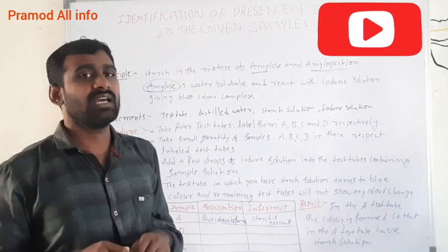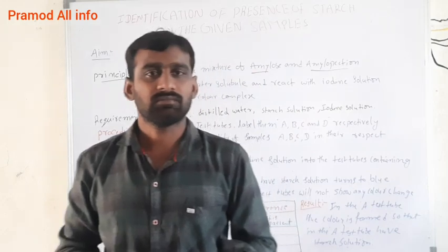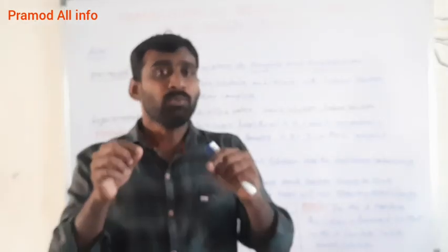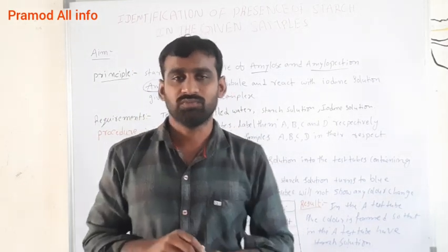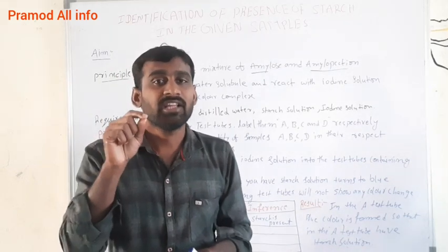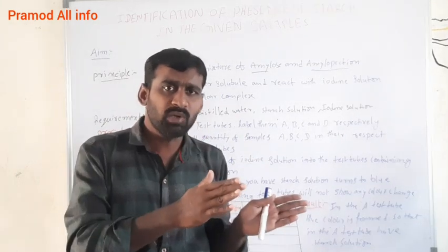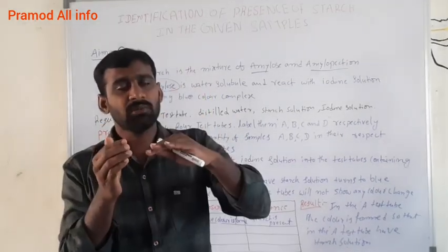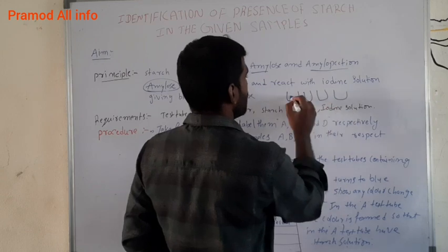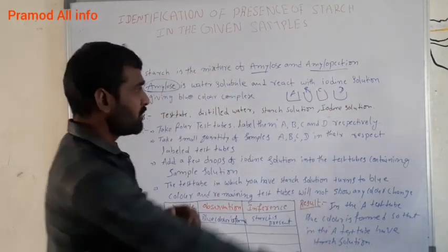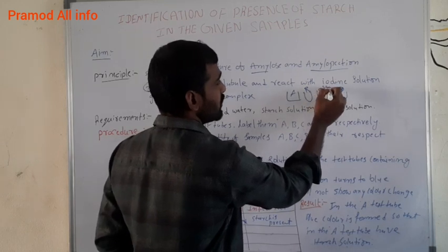I will now show you the test tubes. This is the test tube — the blue color is formed in this one. These are samples A, B, C, D — this sample contains the starch solution.